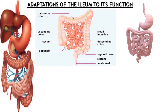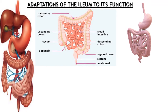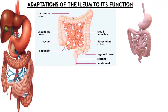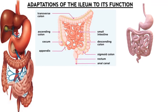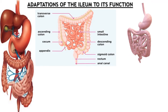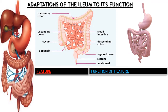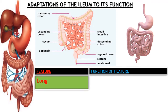As you can see, the ileum is this part of the alimentary canal — the small intestine. The small intestine receives food from the duodenum and then coils several times, as you can see here. That coiling is also a feature we will discuss. In every adaptation we have a feature and we have a function.